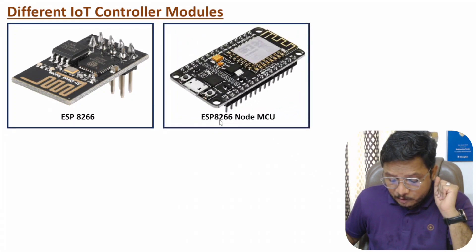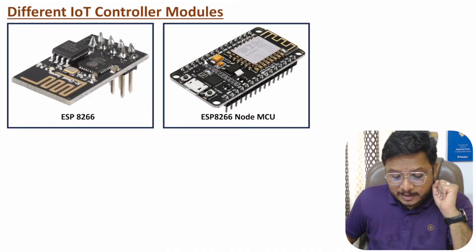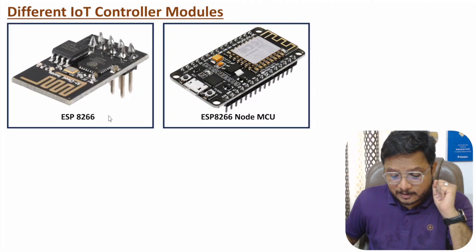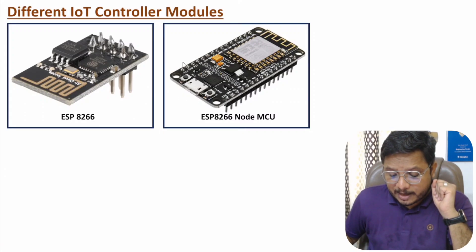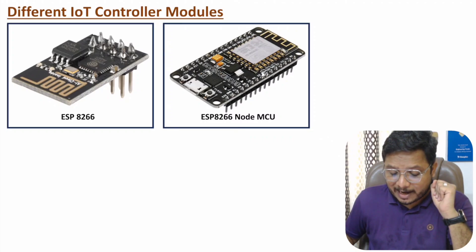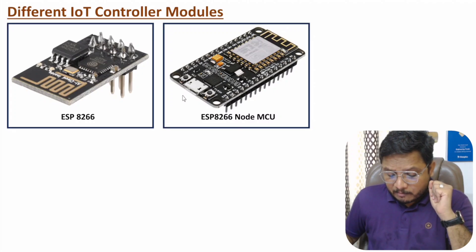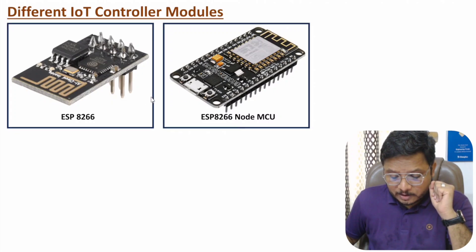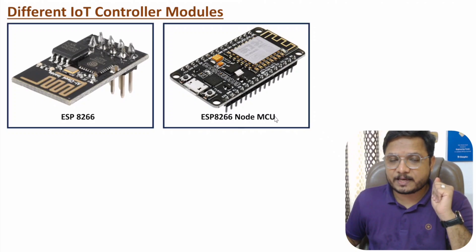After this module, we have the ESP8266 NodeMCU. With this NodeMCU, we have the same processor as the ESP8266, but this module adds a USB connection and more number of IO pins. So here we can handle more IO and have better flexibility of programming. Out of these two, I prefer the ESP8266 NodeMCU.